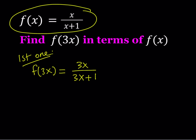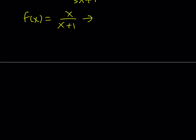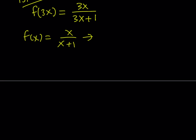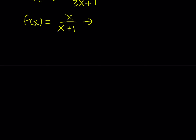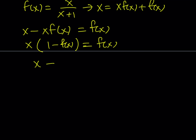In order to do that, we need to work with f of x. So, f of x is equal to x over x plus 1, and we're going to go ahead and solve for x here, so that we can replace x in f of 3x with something in terms of f of x. You cross multiply and get x equals x times f of x plus f of x. Since I'm solving for x, let's subtract x times f of x from both sides and then factor out x. That gives me x times 1 minus f of x equals f of x, and then x can be written as f of x divided by 1 minus f of x.